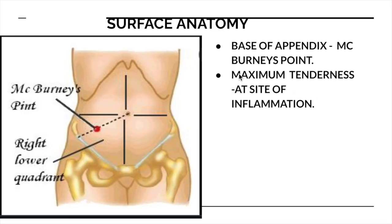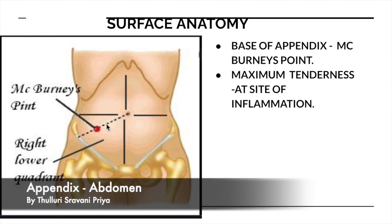Now we will see the surface anatomy. This is McBurney's point. If you draw an imaginary line from the umbilicus to the anterior superior iliac spine, you divide this line into a medial two-thirds and a lateral one-third. The junction between the lateral one-third and the medial two-thirds is the point where we feel the maximum tenderness, and this is the location of the base of the appendix. This point is known as McBurney's point.